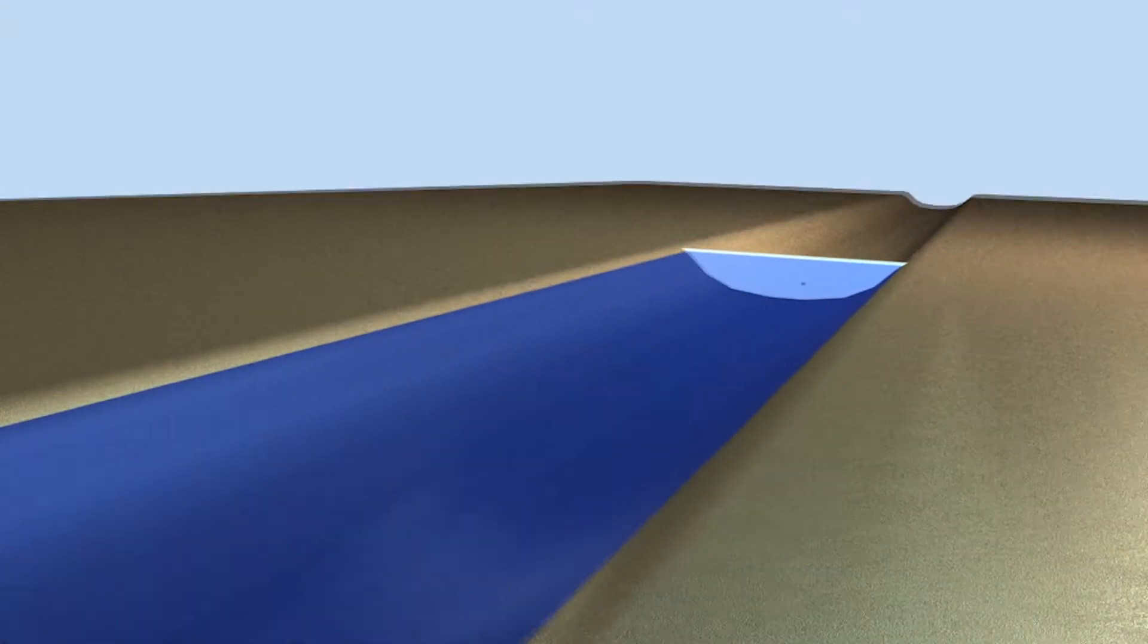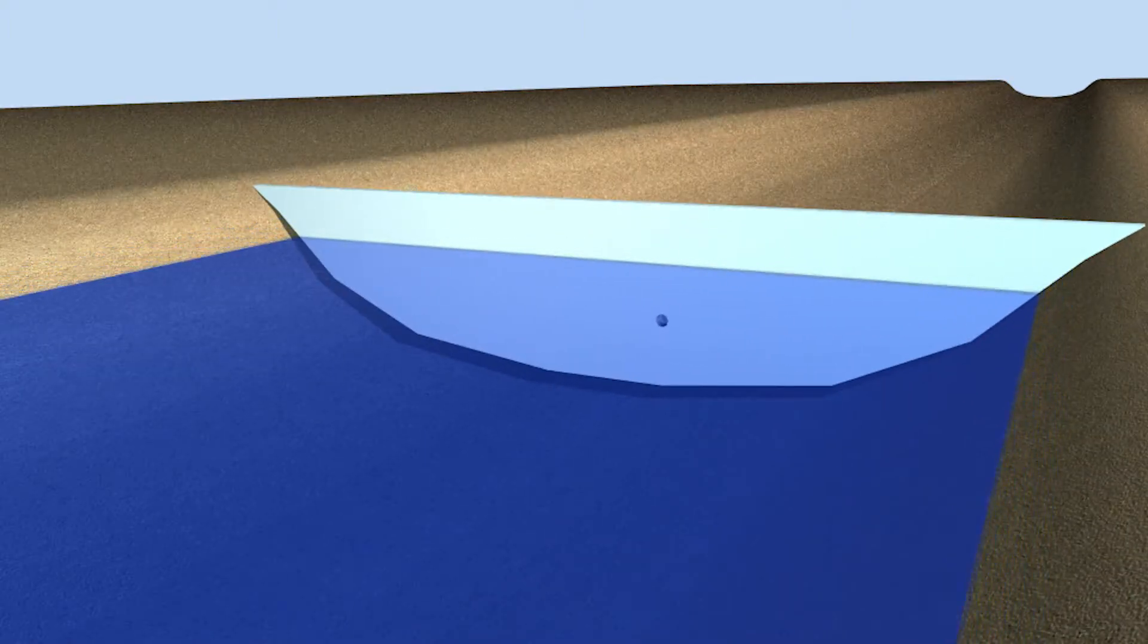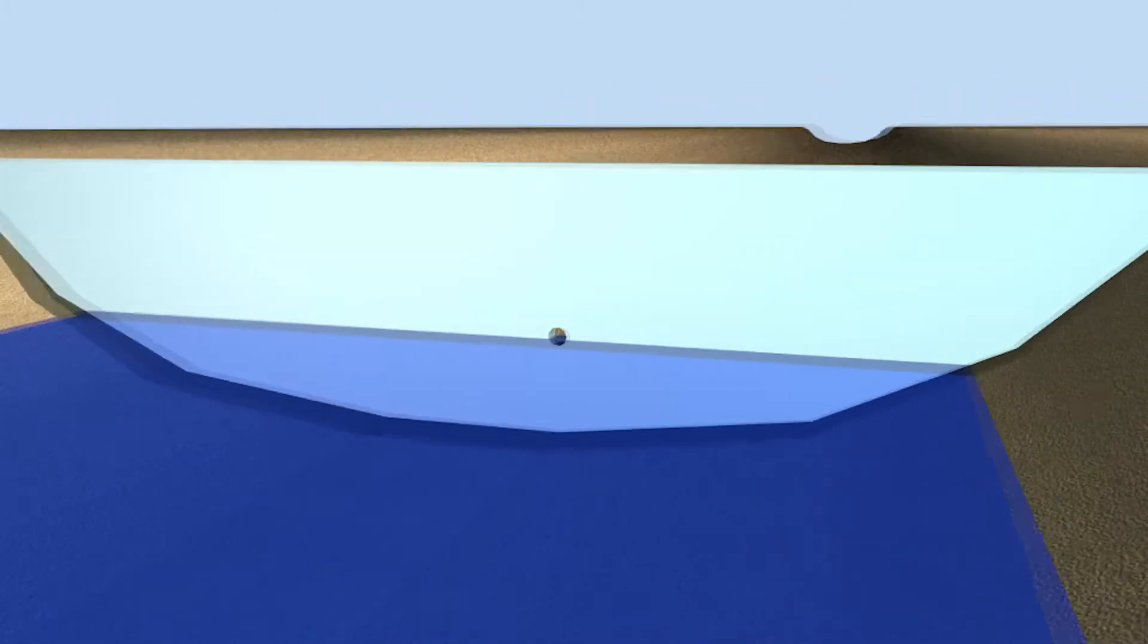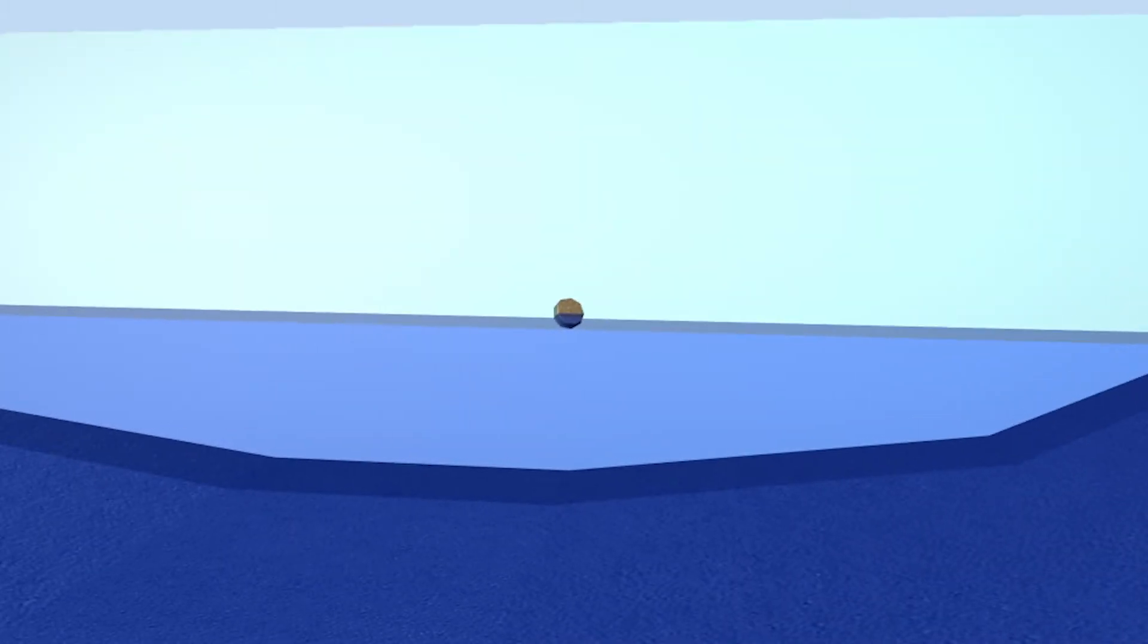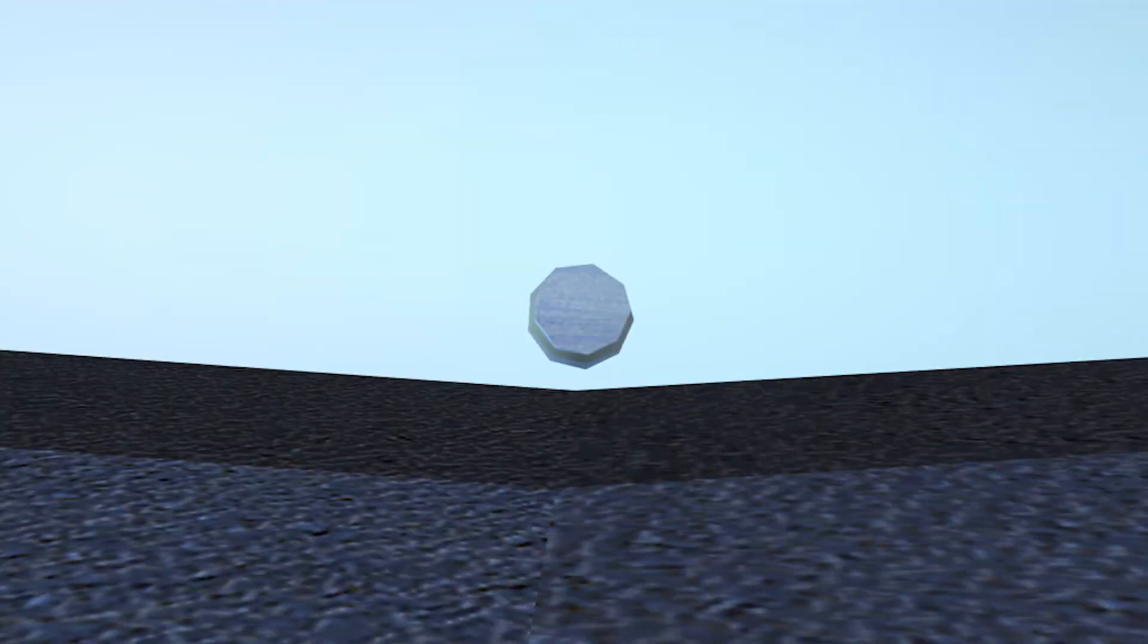Whilst Warragamba Dam is very deep, over 100 metres when full, up to 10% of the water is not accessible because there is no deep water outlet in the dam. The Deep Water Access Project is all about making the water accessible by cutting a hole in the base of the dam.